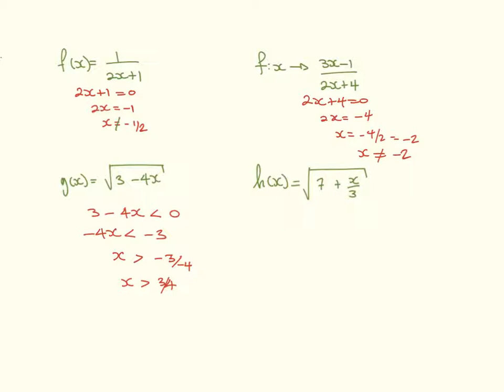But, x can't be any number that's bigger than 3/4. Because any number that is bigger than 3/4 will turn this whole thing into a negative number. And you can't square root negative numbers. So, the domain for this function is that x can take any number except numbers bigger than 3/4. So, I'll just put a line through that to say it can't be any number bigger than 3/4.